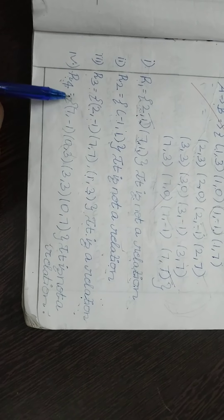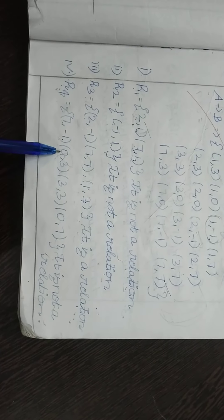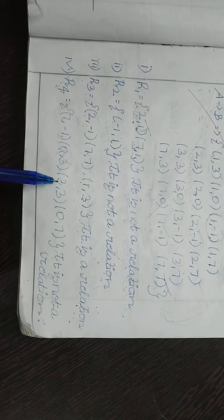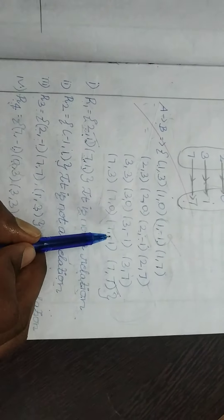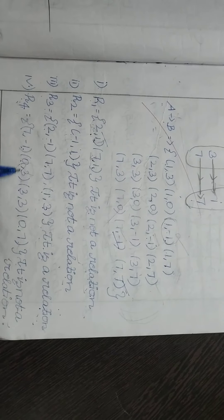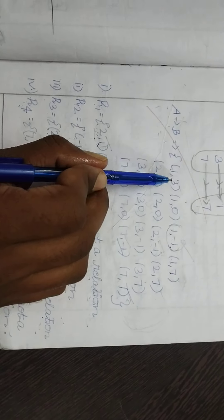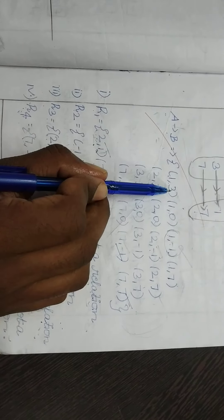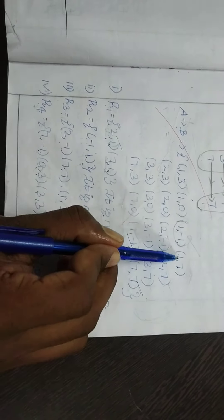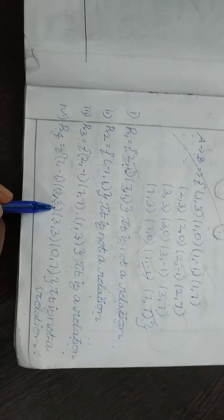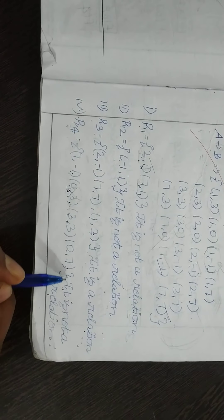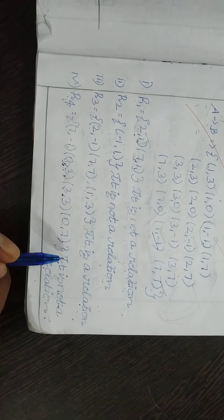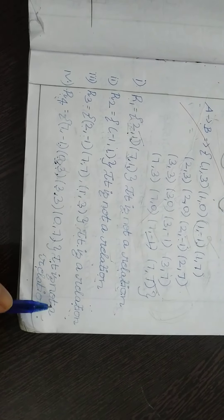Relation: {7,1}, {A,0,3}, {1,7}. Next check (0,3). The Cartesian product gives (1,3), (1,0), (1,1), (1,7), but (0,3) — it is not a relation. So it is not a relation.